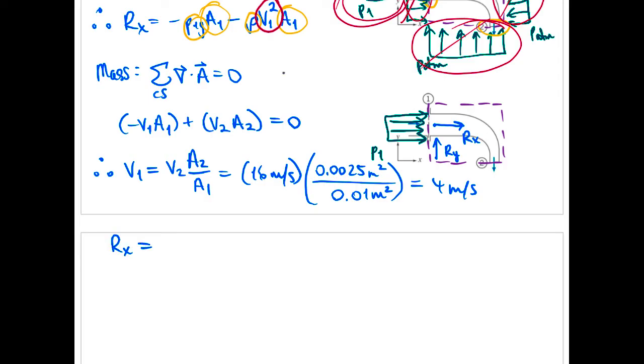Just do a quick side calculation here so we're clear on what p1 gauge is. Kilopascals is a thousand pascals and a pascal is a newton per meter squared.